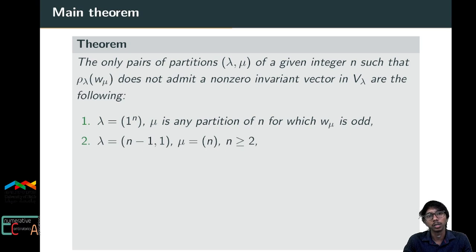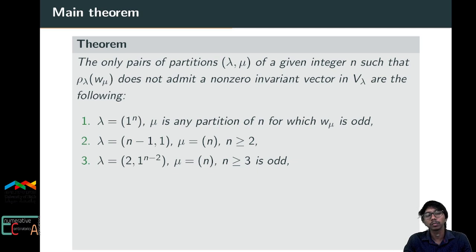The second case is the standard representation with μ equal to (n), meaning the n-cycle, which does not have a fixed point. The third case is the conjugate of the standard representation with the n-cycle, where n is required to be even so that w_μ becomes an even permutation.